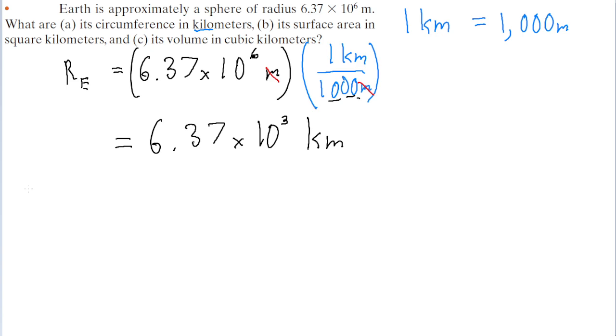Now that we've got the radius in units that is most convenient for us, let's start with the actual problem itself. Part A asks for us to find the circumference of the Earth given this radius. Now again, if you know the right formulas, then all three parts of this problem can be one step each.